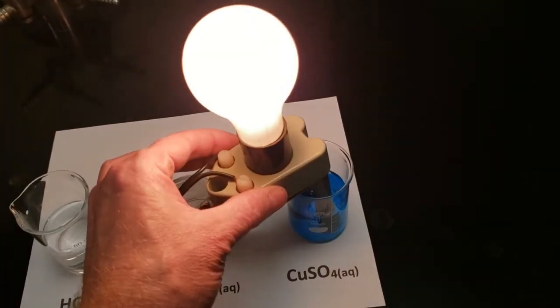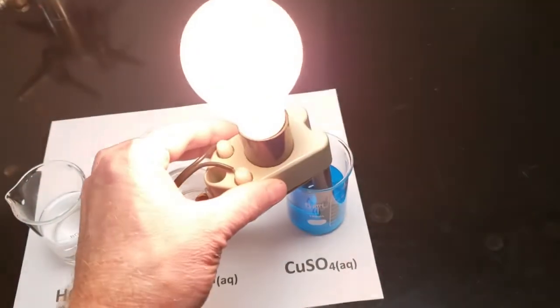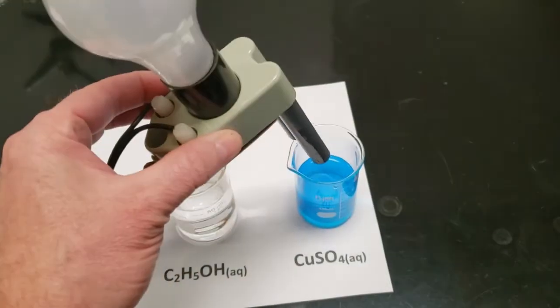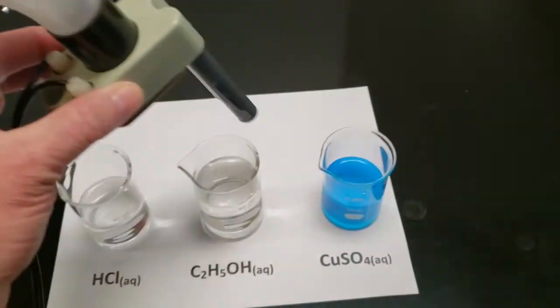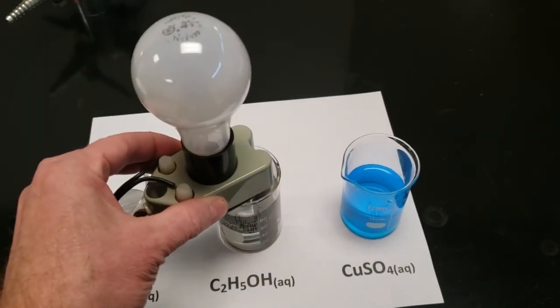Here we have copper sulfate. It's an ionic compound. When you dissolve ionic compounds, they not only become aqueous, the ions move away from each other, and they have mobile ions.